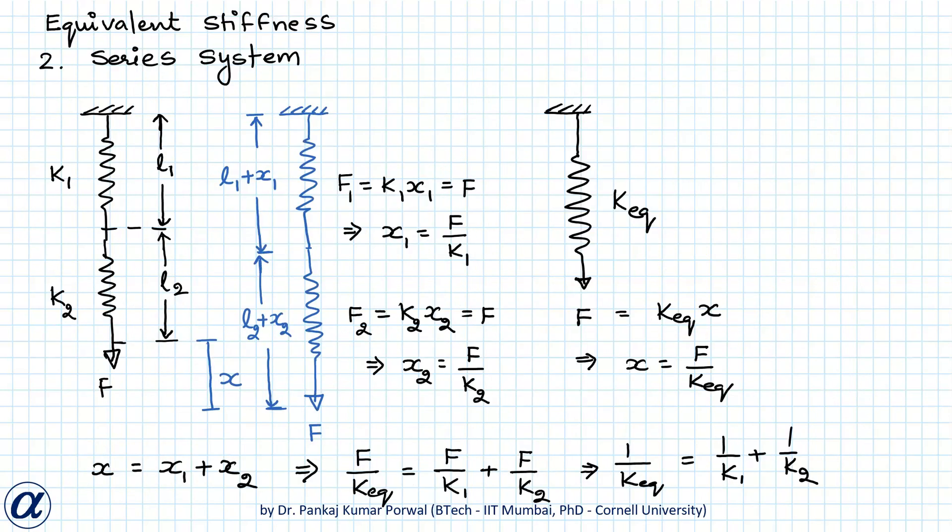Similarly in a series system we have two springs with stiffness k1 and k2 and their lengths are L1 and L2. And if this system by application of force F stretches by amount x, then by looking at the geometry of the two springs, say the stretching of first spring is x1 and stretching of second spring is x2.